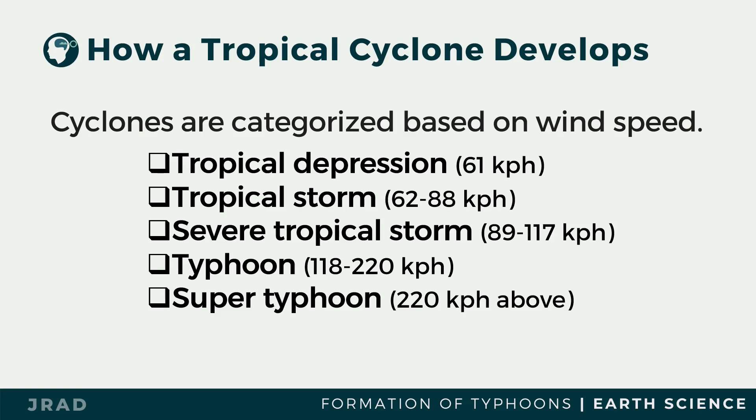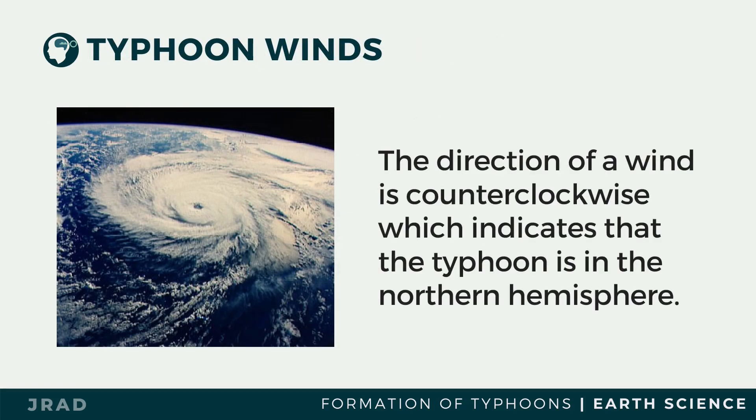If the direction of the wind is counterclockwise, it indicates that the typhoon is in the northern hemisphere. If the eye of a typhoon passes directly over an inhabited area, the people will experience strong winds twice — first as the typhoon approaches, followed by a period of calm without rain as the eye passes, and second when the other side of the eye hits the area.